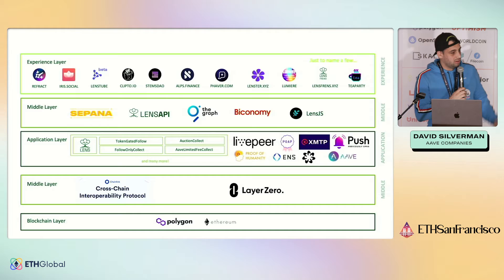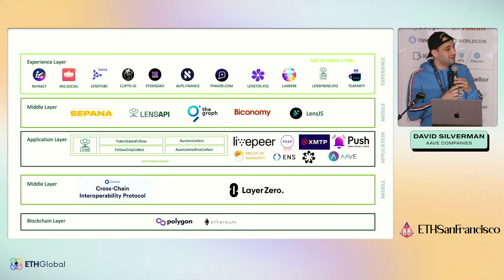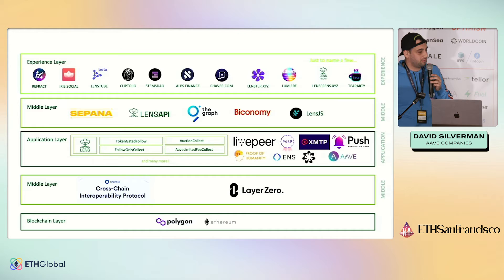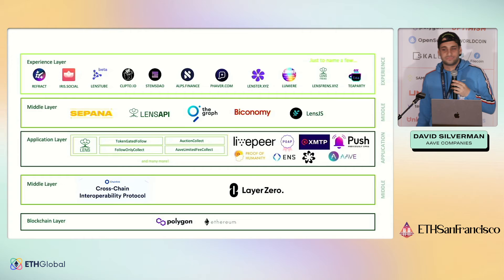On querying: folks from DeveloperDAO have built a subgraph you can query. We also recommend the Lens API — it is open, no key required, no account needed — and it stays up-to-date much faster than a traditional subgraph, allowing you to get real-time information from the social graph.